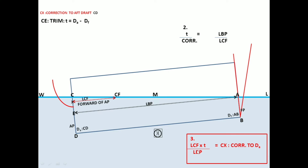This formula — correction = LCF × trim ÷ LBP — is what you will apply whenever referring to hydrostatic tables and ship data. As you can see in this case, the correction is subtracted from the after draft. The correction to the after draft can be plus or minus: if the trim is by stern, you subtract; if the trim is by head, you add. In older times, distances were given from midships, but the fundamentals are the same — the same formula to find the correction to the draft, though corrections were applied to the mid draft.